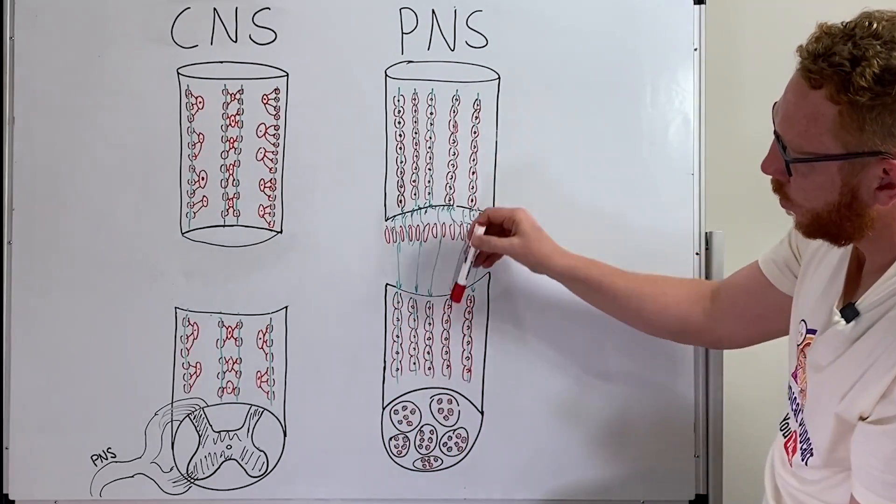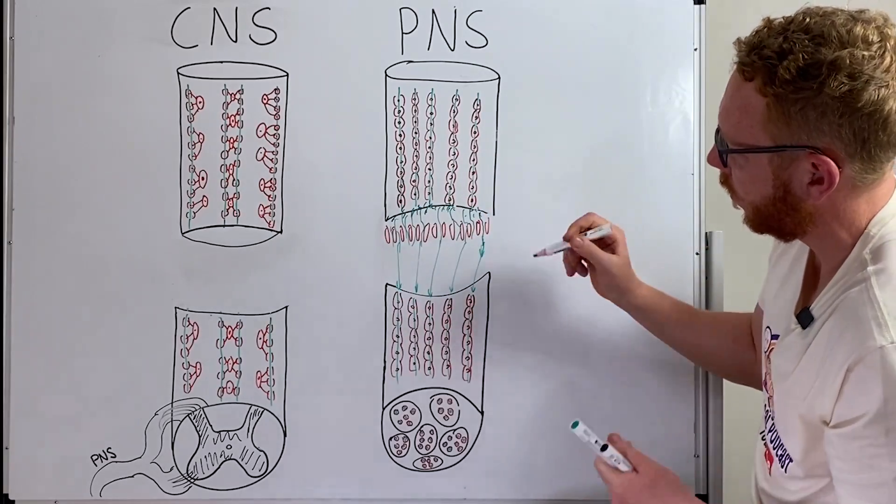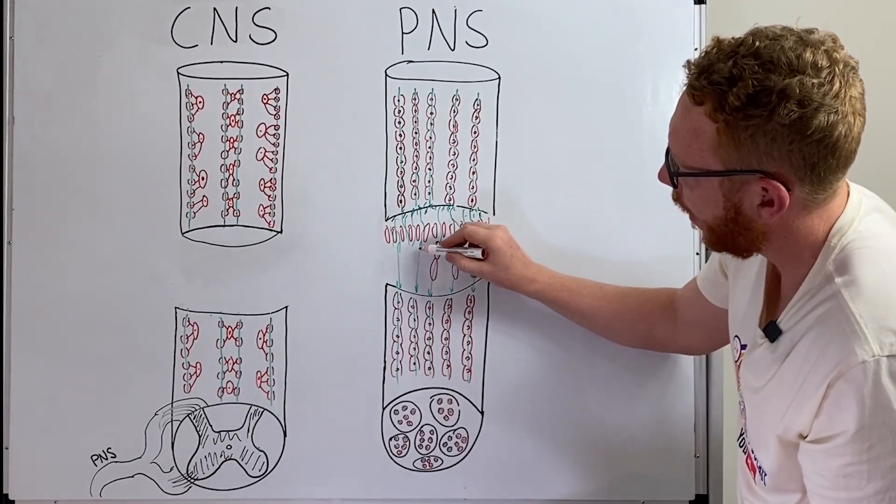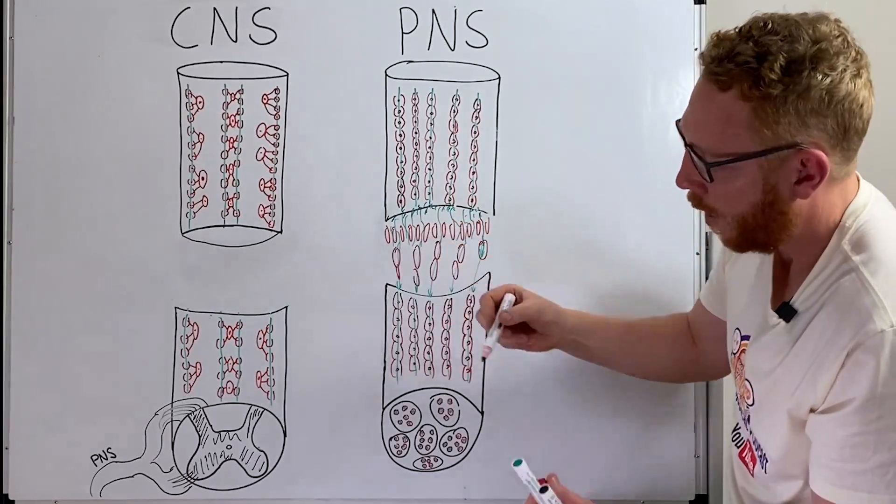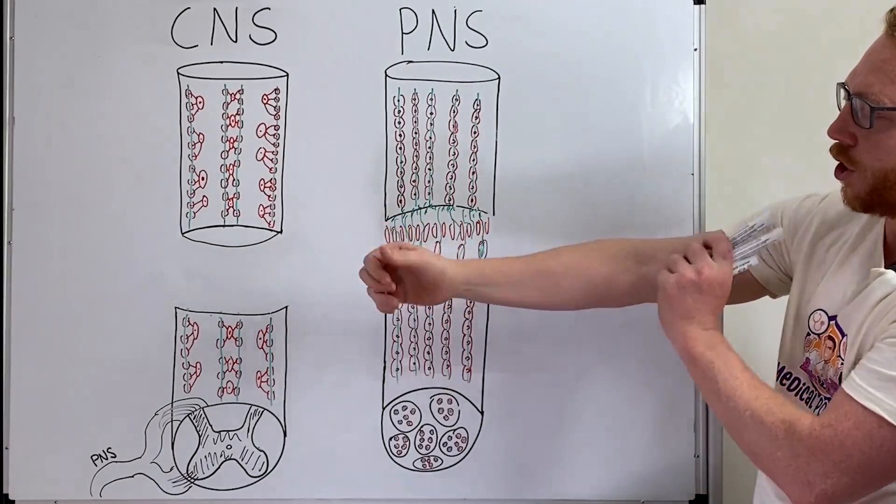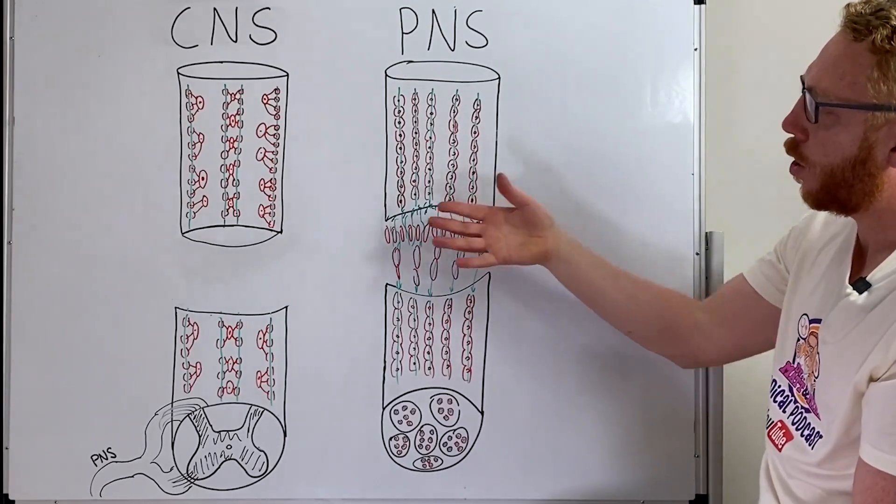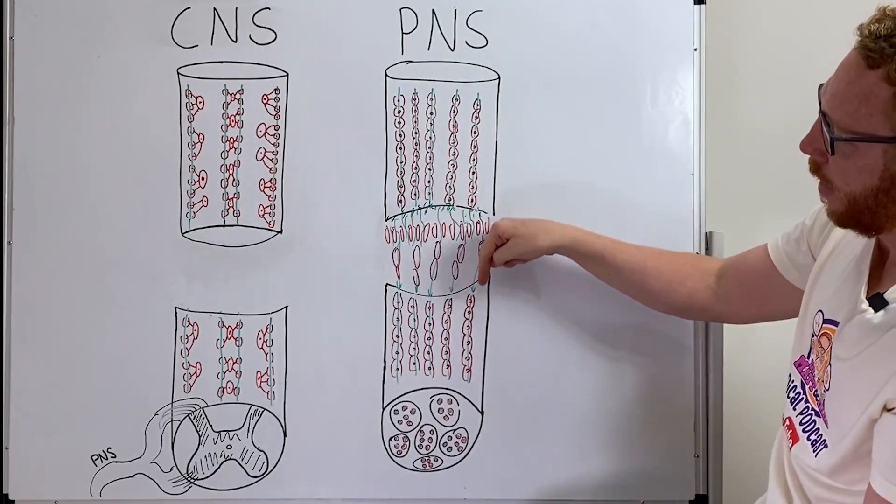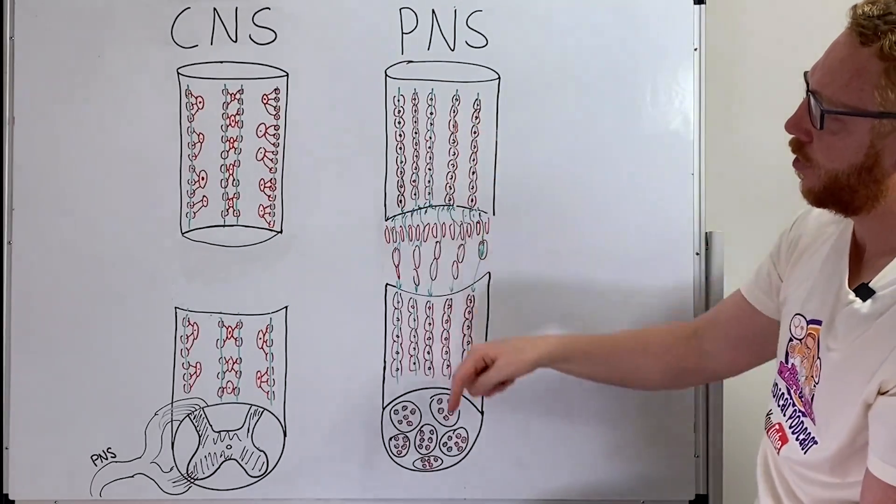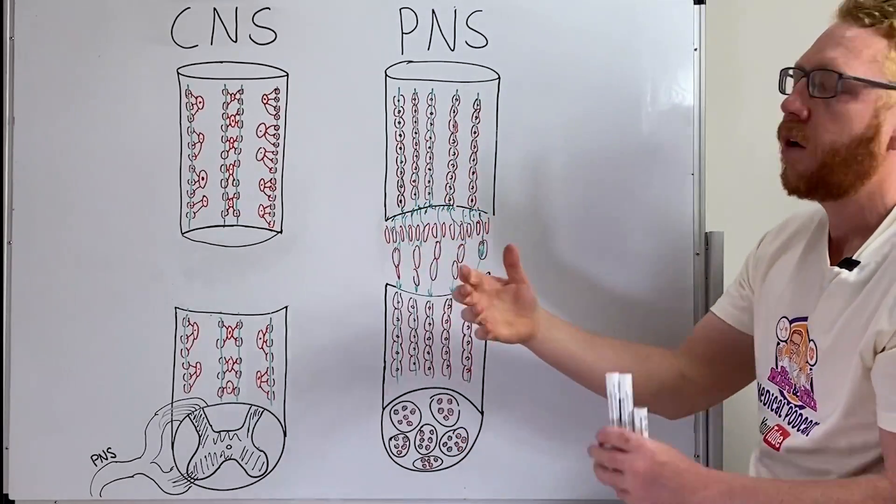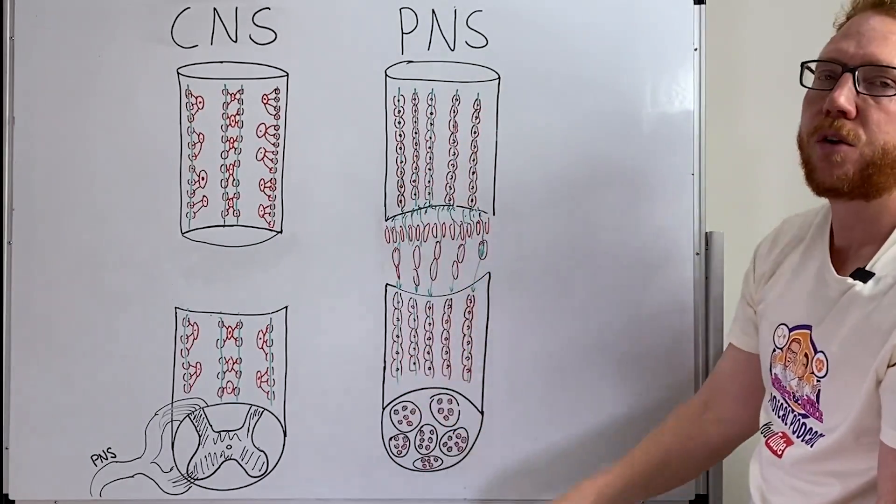Now as they start to make these connections the Schwann cells will then go back to myelinating and wrap it up. And so when we have an injury like a crush it's very effective because there's no real loss of tissue and that process is very efficient. So basically when we have crush injuries in any peripheral nerve we have a very good outcome.